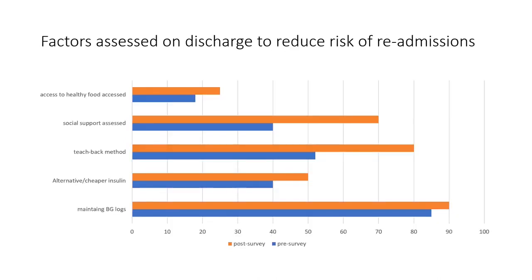This bar graph shows the factors that were assessed on discharge to reduce the risk of readmissions. Most residents assessed their patients and discussed maintaining blood glucose logs with them. However, we noticed a dramatic increase in assessing for social support, which improved from 40% pre-survey to almost 70% post-survey. We also noticed an increase in the number of residents using the teach-back method to assess patient understanding.